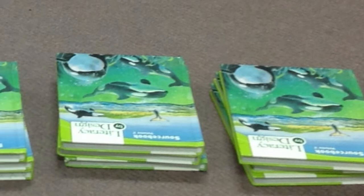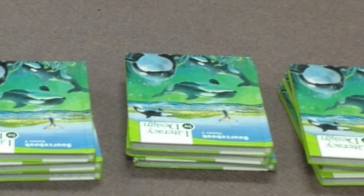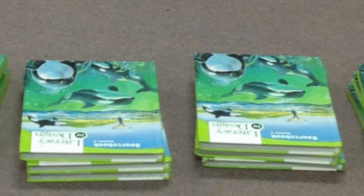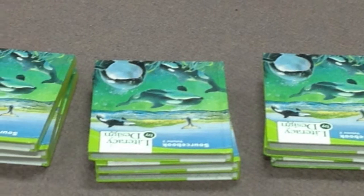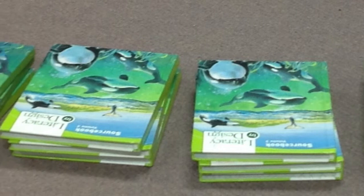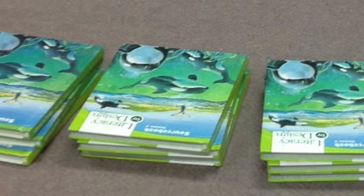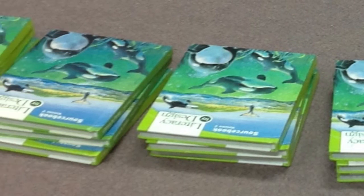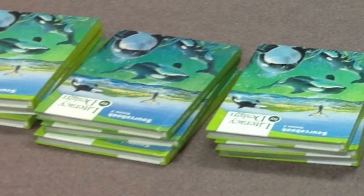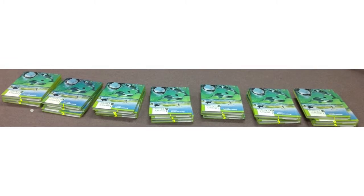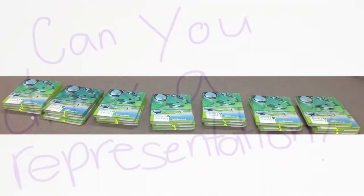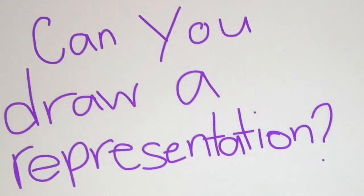This is three groups of seven. Can you see three groups of seven? Can you draw a representation? This is three groups of seven.